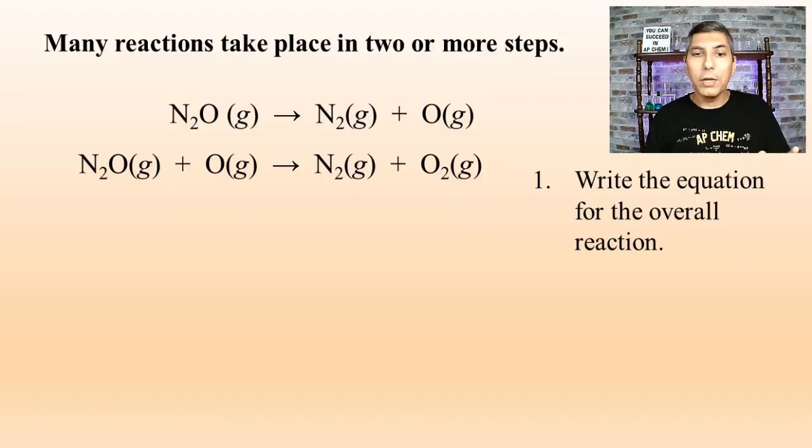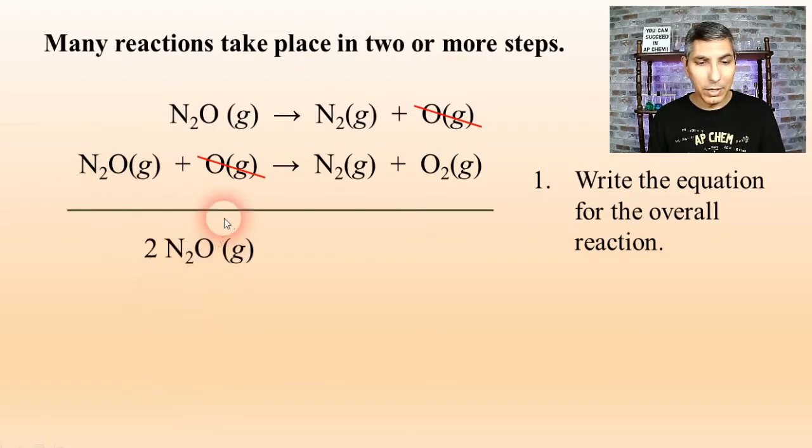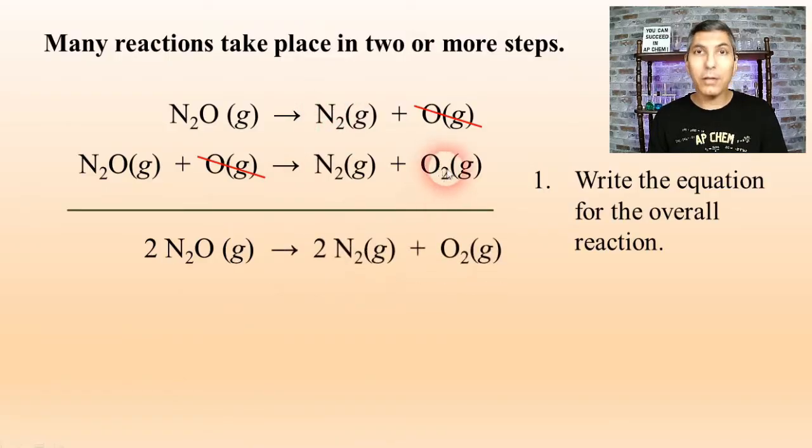Well, pretty simple. All we have to do here is add those two steps together. And you might notice that, just like you would in algebra if you were adding two equations together, that we have some substances here that we might need to cancel out before we can do this. There's the oxygen atom that's produced in the first step that's used up in the second step that we can cancel out. So we're going to cancel that, and now we can add up these two steps. We have two molecules of dinitrogen monoxide, and the products are two molecules of nitrogen gas and one molecule of O2 gas. And so here we have the overall balanced equation for this process.